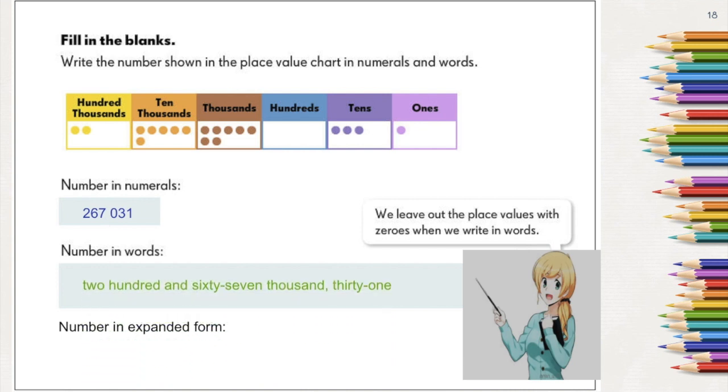This number can also be written in expanded form. When we say expanded form, this is a way of writing numbers showing the place value of each digit, like this. So the expanded form for 267,031 is 200,000 plus 60,000 plus 7,000 plus 0 plus 30 plus 1. You may omit this part since this portion has no value.